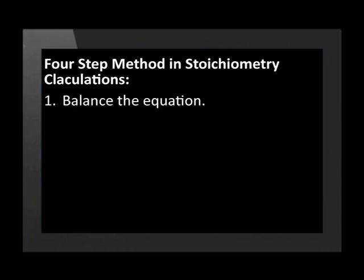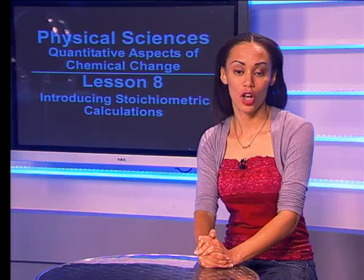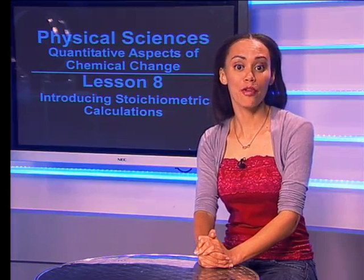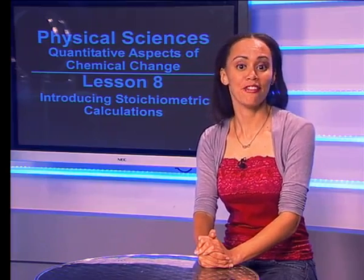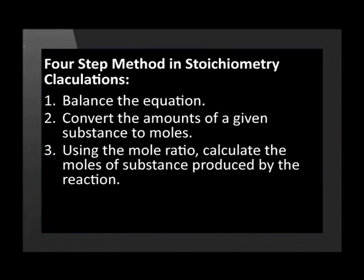Step 1 is to balance the chemical equation. Step 2 is to convert the amount of substance that is given to you into moles. To do this, we would need to make use of the formula number of moles equals mass divided by molar mass. Step 3: Using the mole ratio, calculate the moles of substance that is produced or used by the reaction.